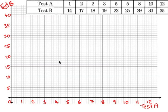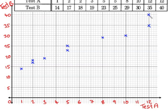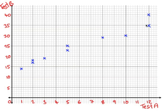Each person is represented by a cross on the diagram. The first person scored one in test A and 14 in test B. The second person scored two in test A and 17 in test B, then 2, 18 and so on.